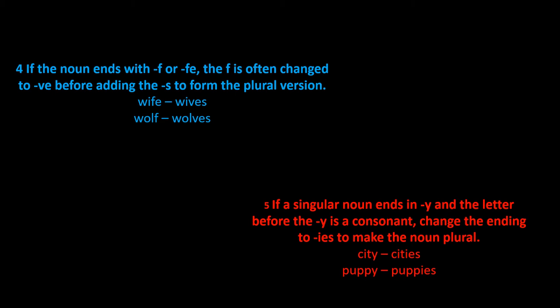Rule 4: If a singular noun ends in Y and the letter before the Y is a consonant, change the ending to IES to make the noun plural. Examples: city becomes cities, puppy becomes puppies.